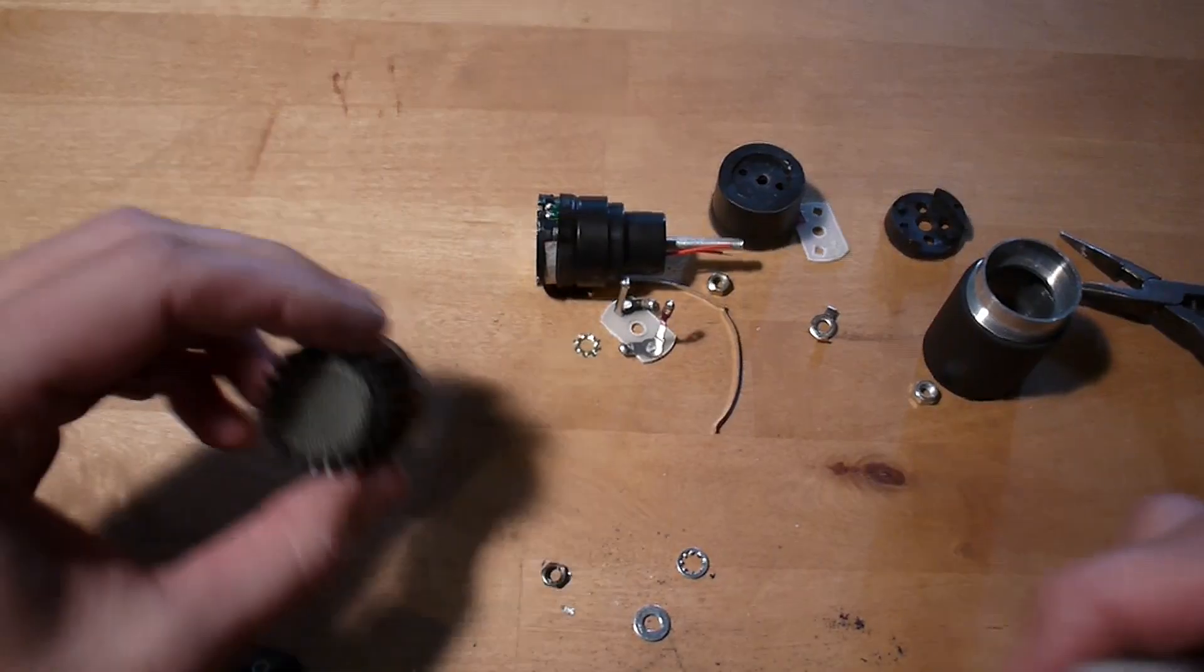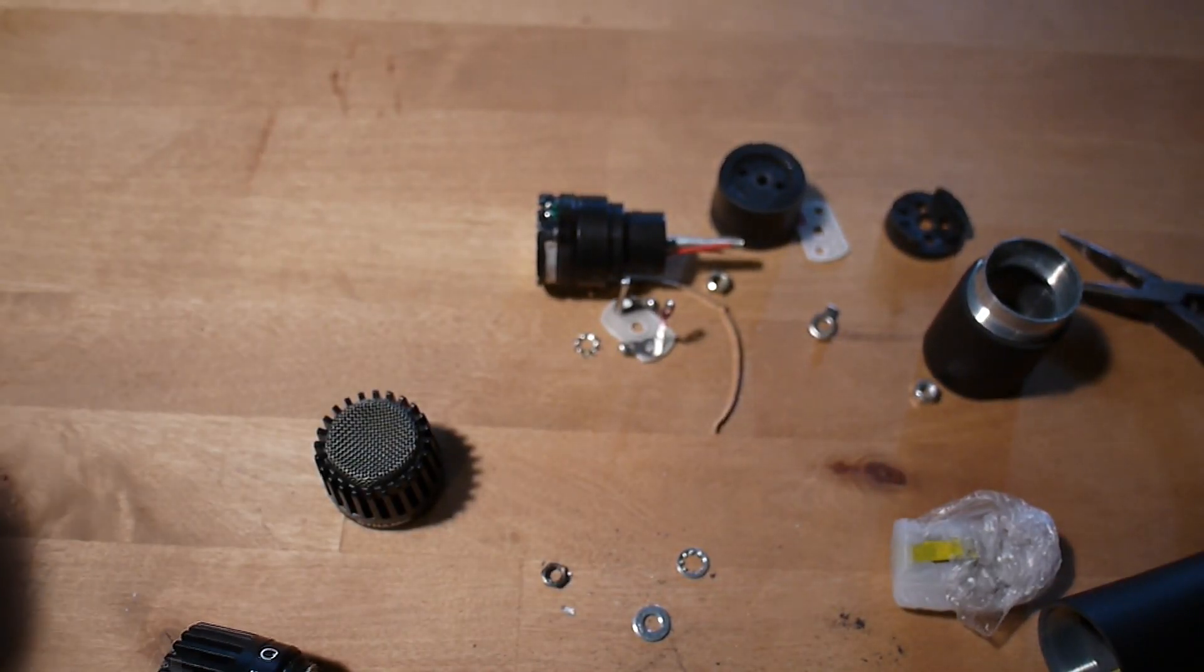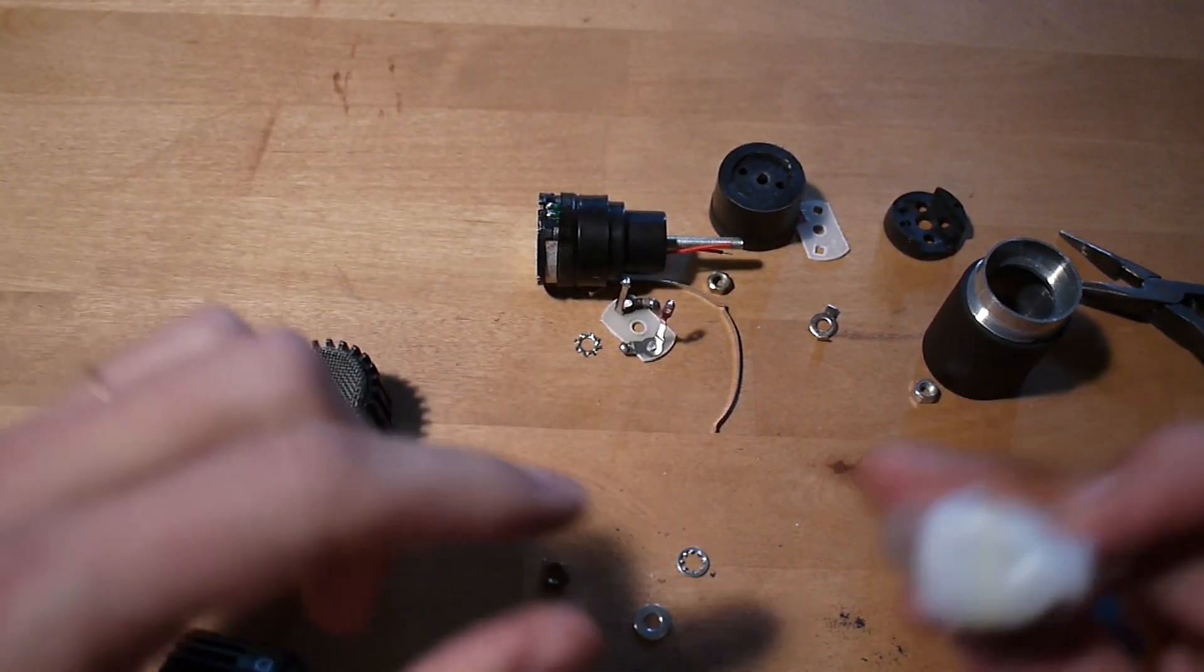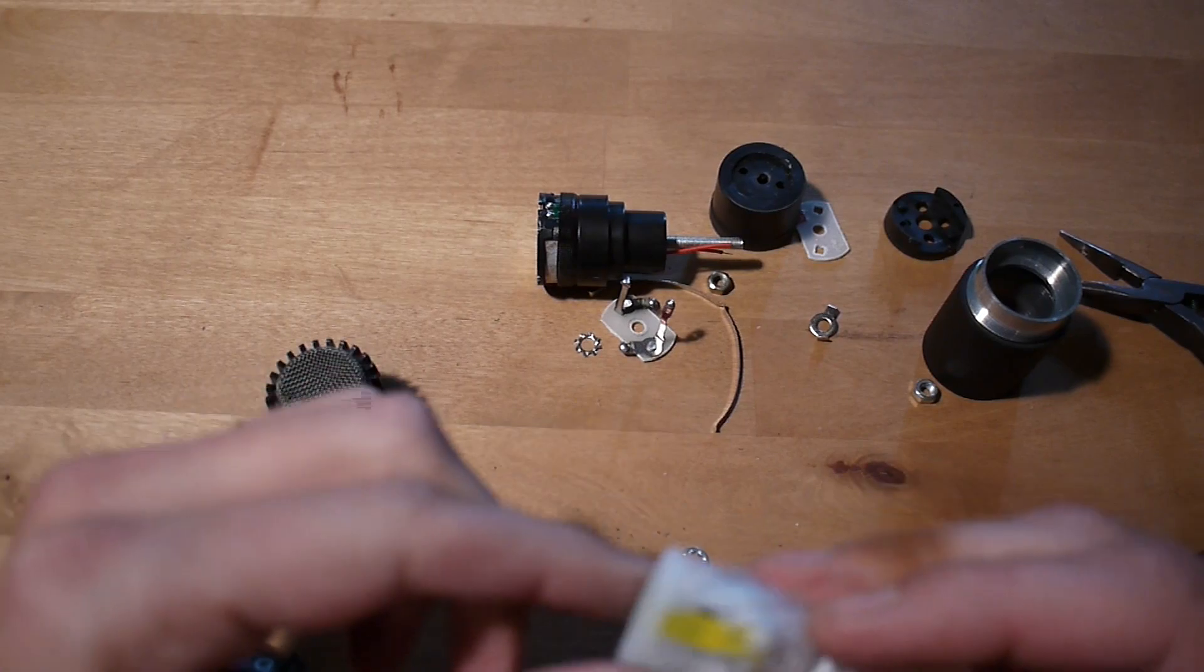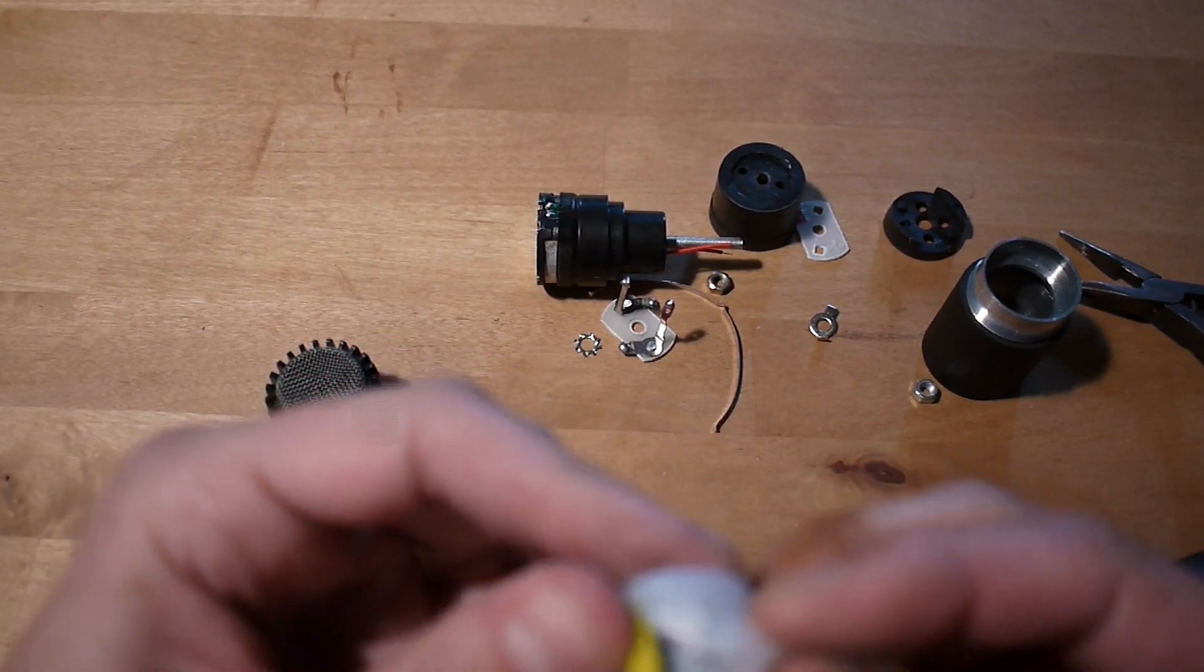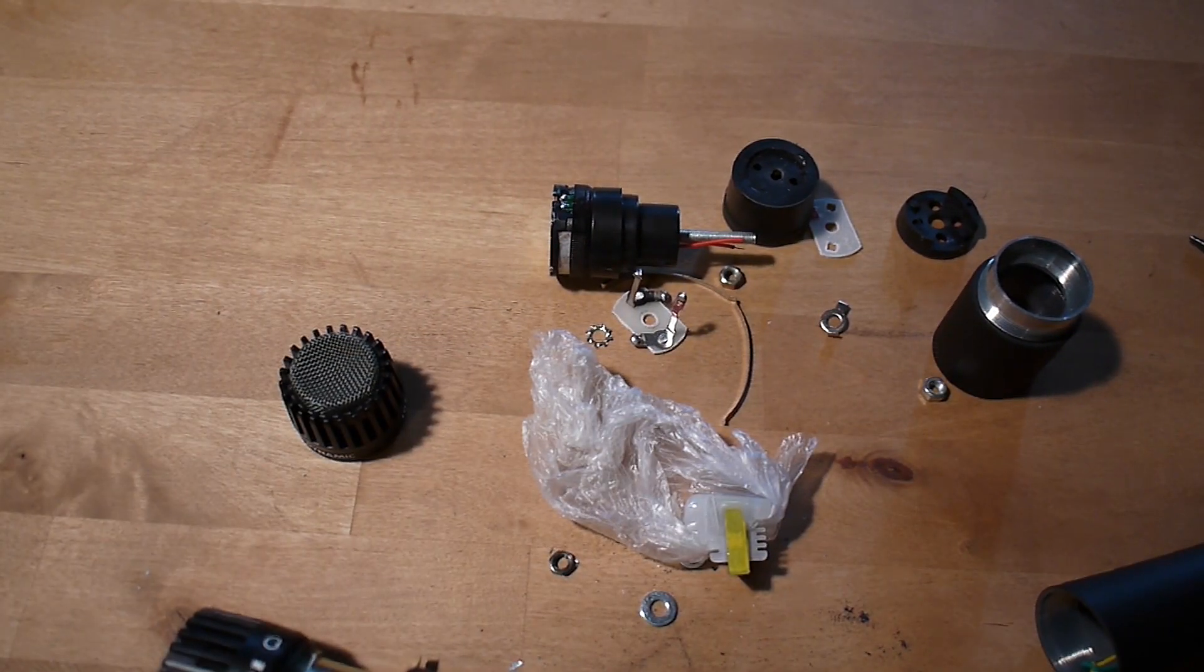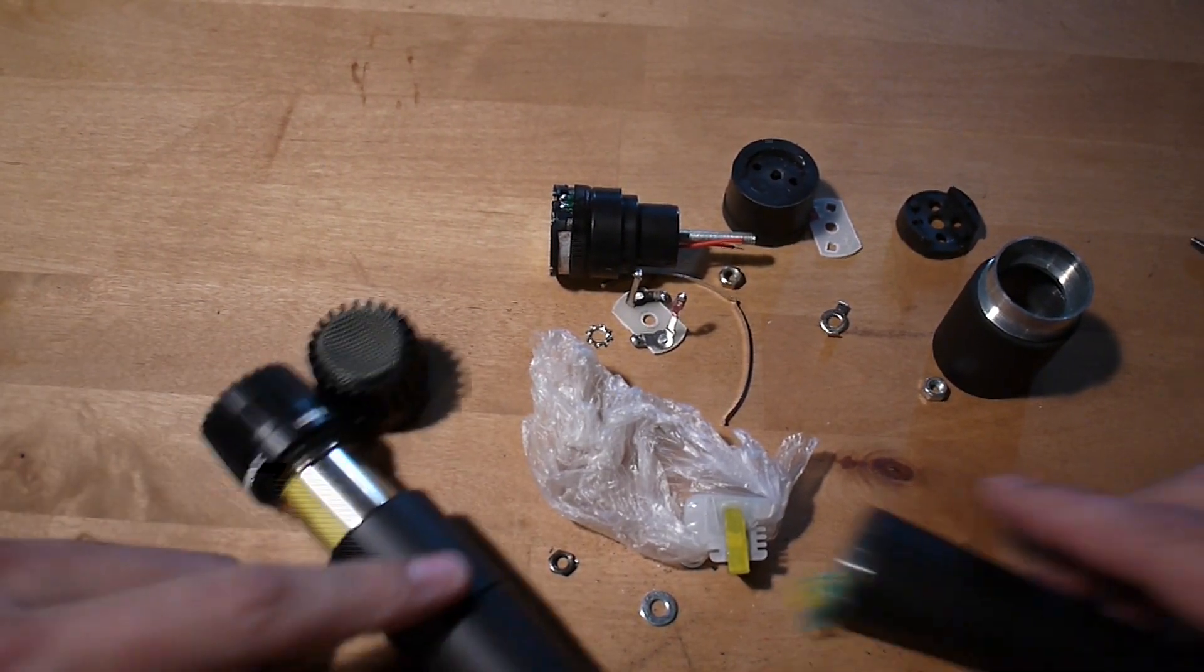So there you go. To recap, the easiest ways you can tell you have a fake SM57 is the top can spin and you'll find this fake plastic transformer that does absolutely nothing sitting inside. And there you go. That's a real SM57 versus a fake.